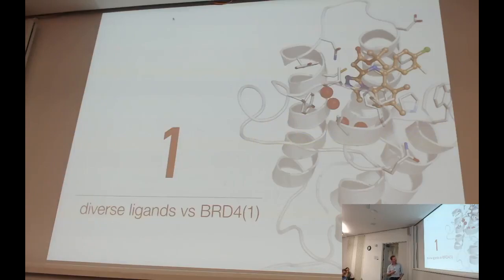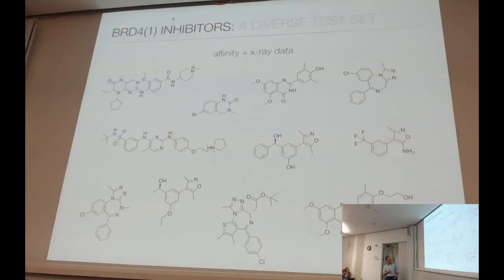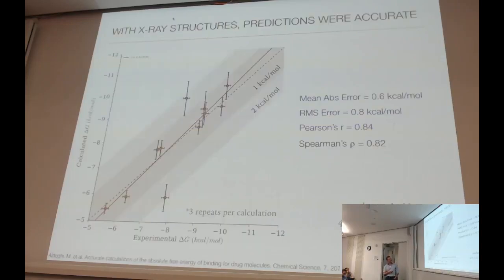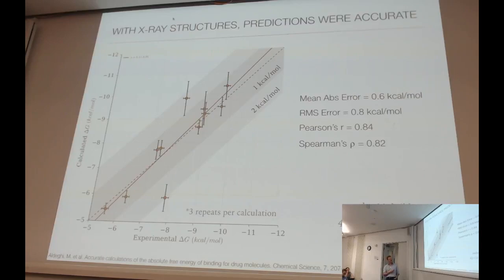The first case is this diverse series of ligands against BDR4.1. You can see these are very different compounds, so it's quite hard to imagine matching between them in a relative free energy calculation scenario. This is the calculated versus experimental data. You can see this is pretty accurate — of course, this is slightly cheating because we knew the answer before we started. But the mean absolute error is pretty impressive, down to 0.6 kcal/mol, and it gave quite nice correlation coefficients. This is done with three replicates per calculation, so you can see we have a genuine estimate of the error.